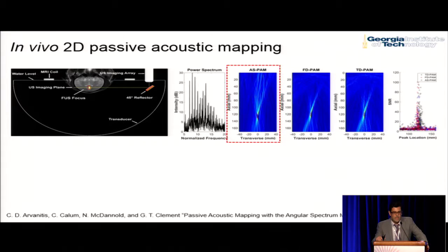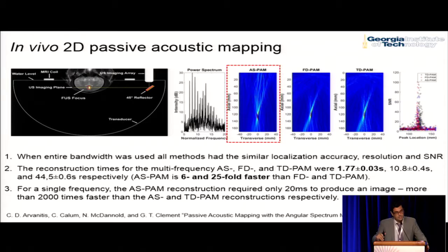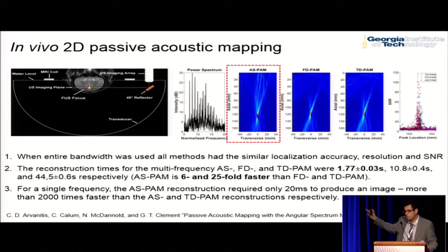Comparing the angular spectrum method with the frequency domain method and the time domain passive acoustic method, we achieved the same localization accuracy and the same image quality characteristics — in some cases the angular spectrum method was better. We were six to 24 times faster. These data use the entire spectrum as a frequency-selective reconstruction.